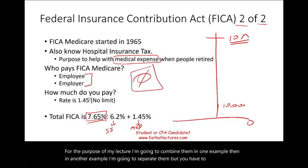To summarize who pays what: the employee pays income tax withholding, FICA Social Security, FICA Medicare, medical insurance, union dues, charitable contributions, and 401k. The employer pays matching FICA Social Security and FICA Medicare — the same amounts as the employee — plus FUTA and SUTA.